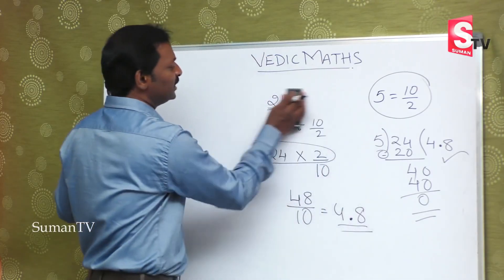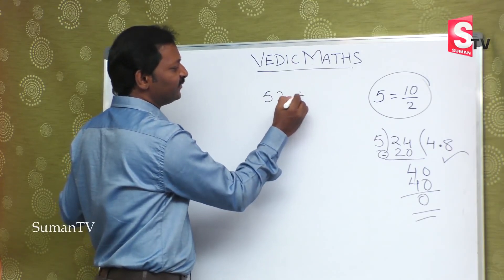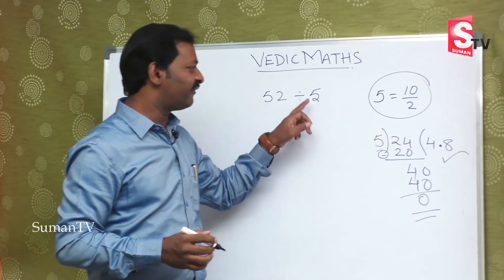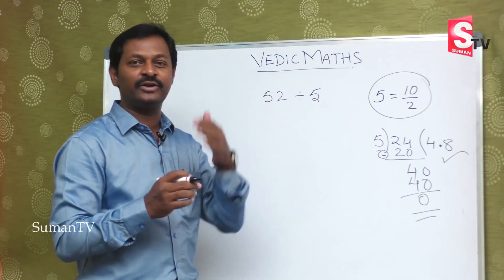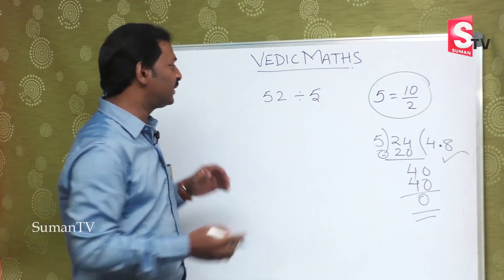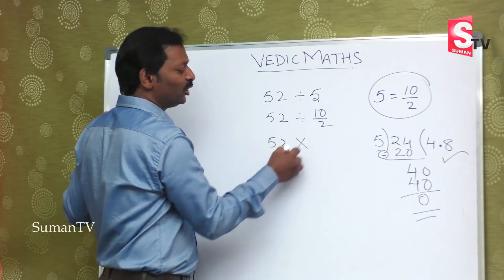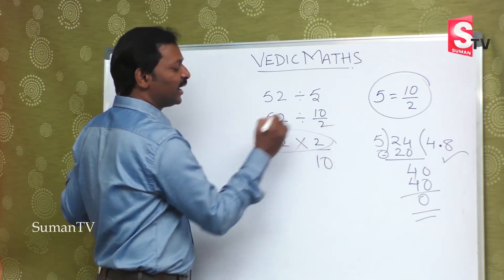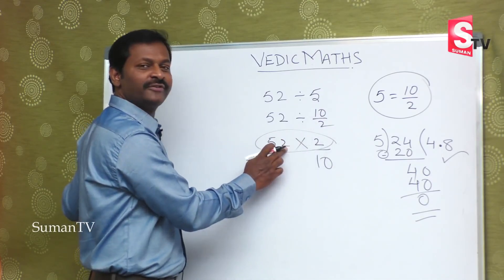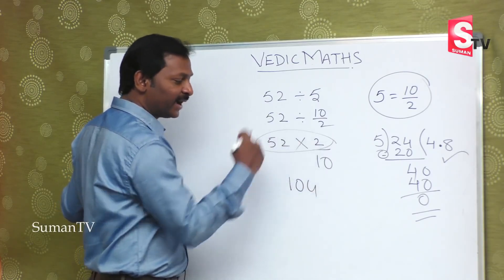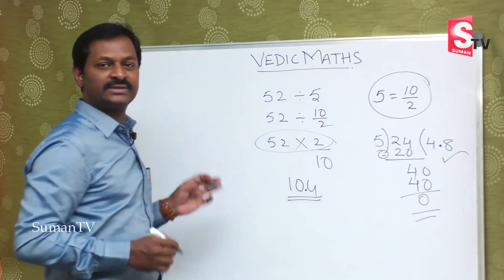Now we will see one more example. Suppose fifty two is divided by five. Mentally, five means ten by two. Convert the division to multiplication: two by ten. So the number becomes fifty two into two. Fifty two times two: fifty two two-za hundred, two two-za four — hundred and four by ten. By ten means put a dot one digit from the right. You get ten point four as the right answer.